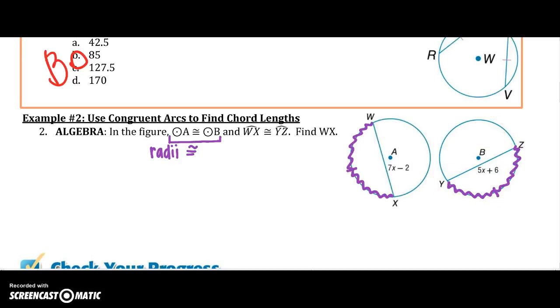And I want to find WX, so that means its chord. Well, because I know that the arcs are congruent, so are the chords, the corresponding chords that are congruent. So I know that WX is congruent to YZ's, and this is congruent to that.